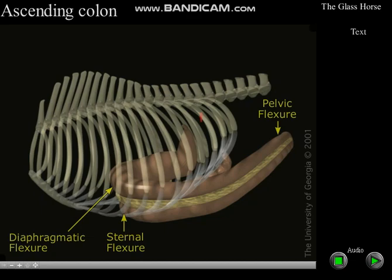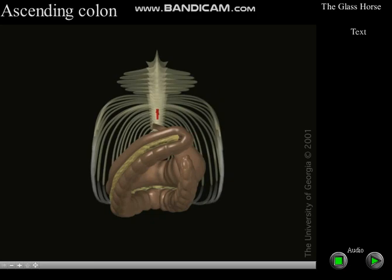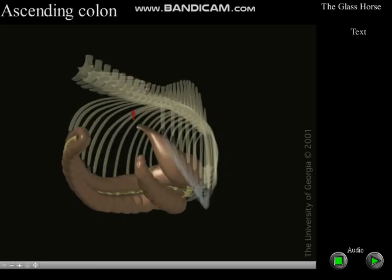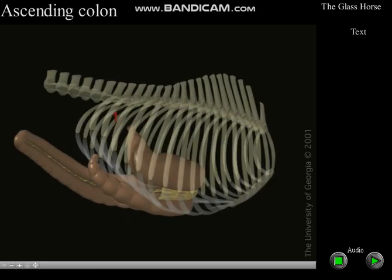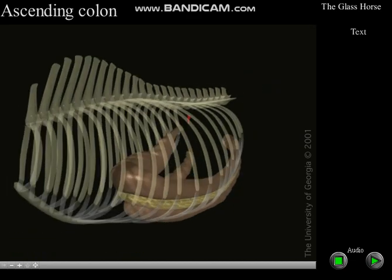In turn, ingesta moves through the right ventral colon, sternal flexure, left ventral colon, pelvic flexure, left dorsal colon, diaphragmatic flexure, and right dorsal colon.